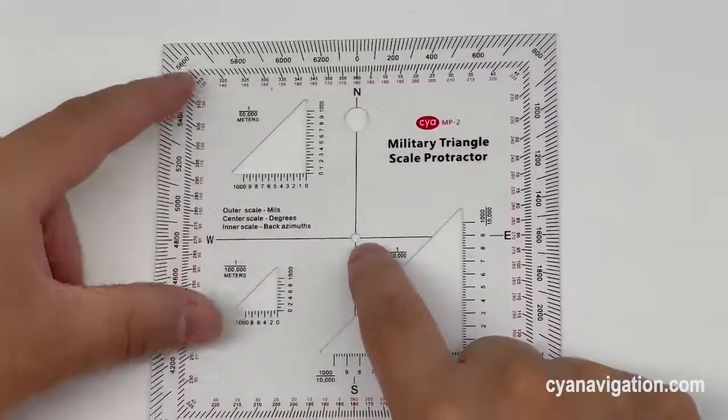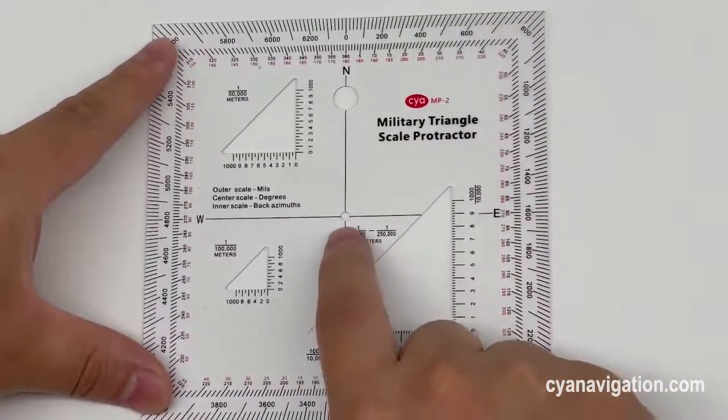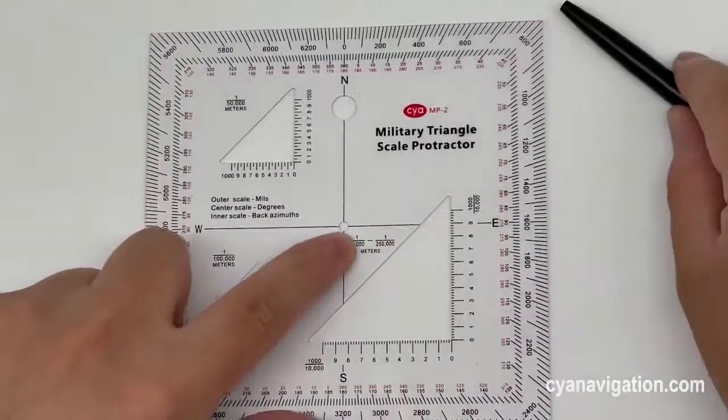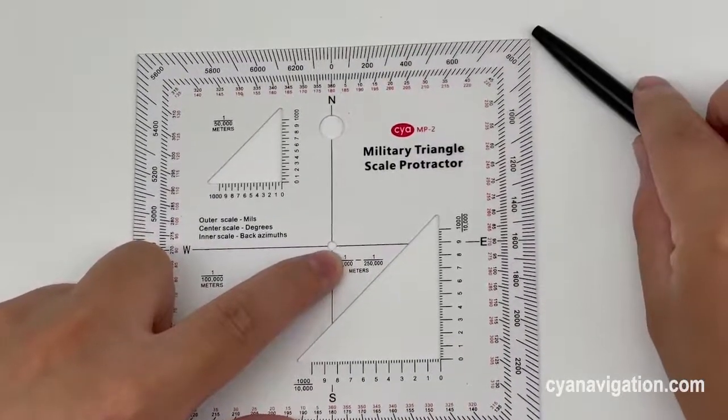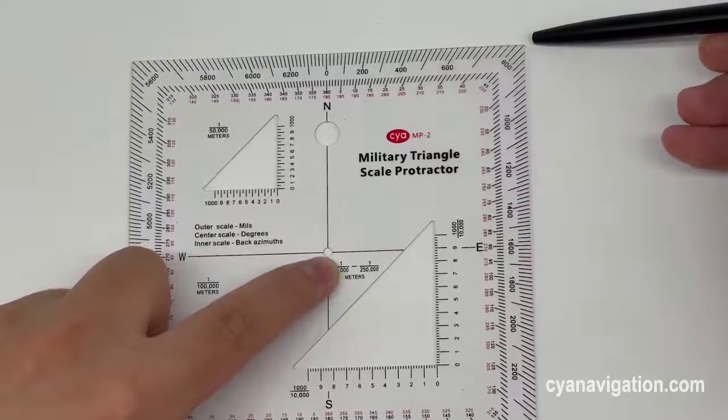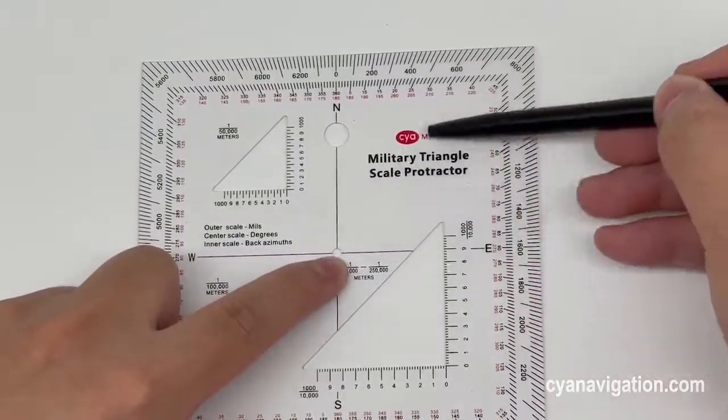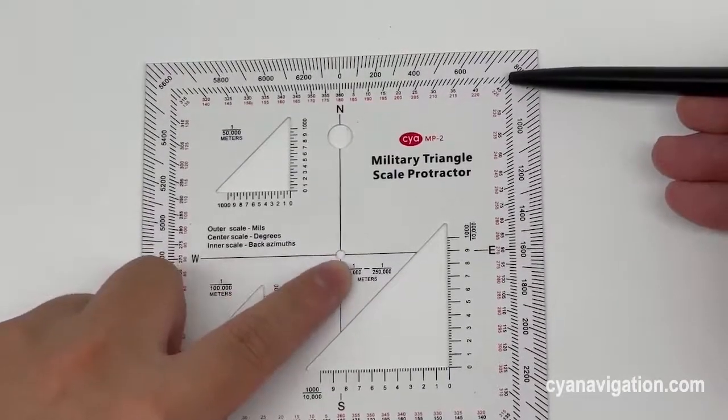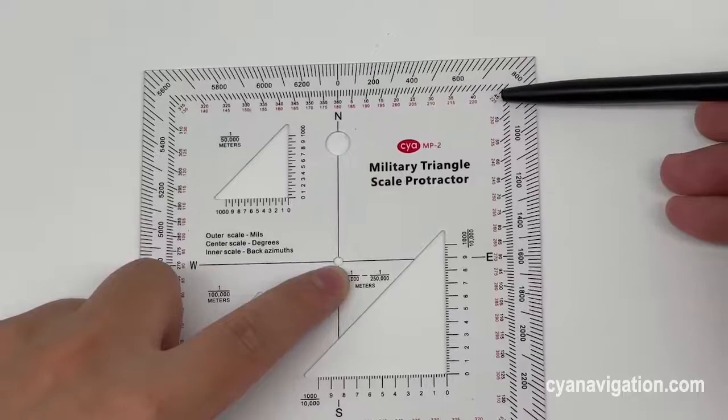So let's assume we are measuring between two points on the map. From this departure point to this destination point, we can draw a line and read the degrees at 45.